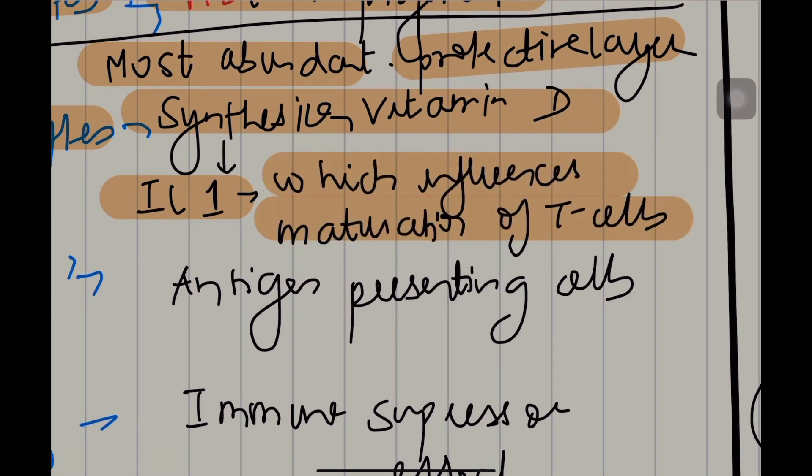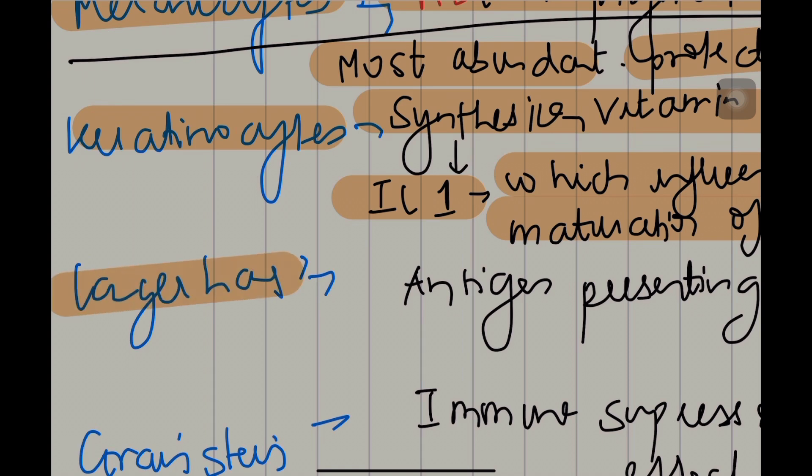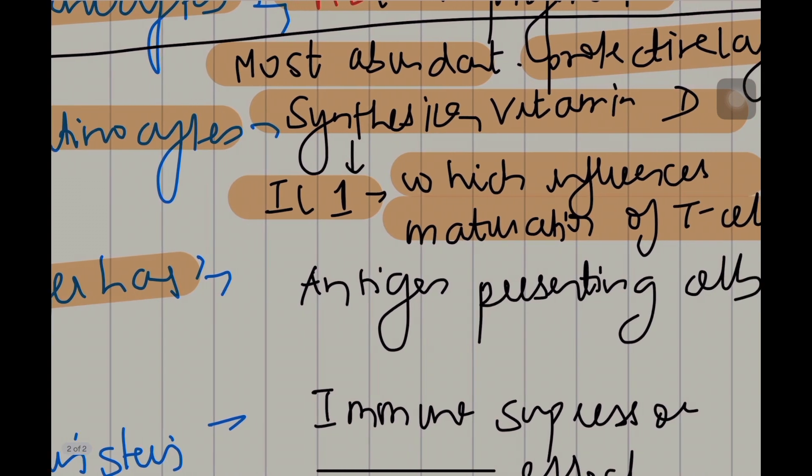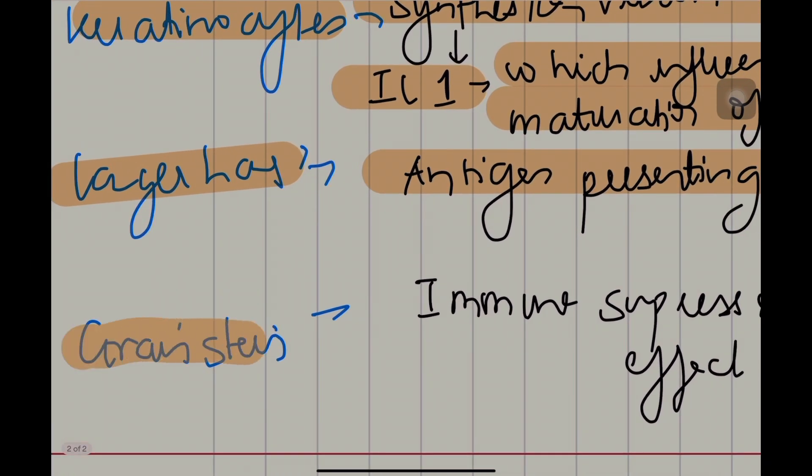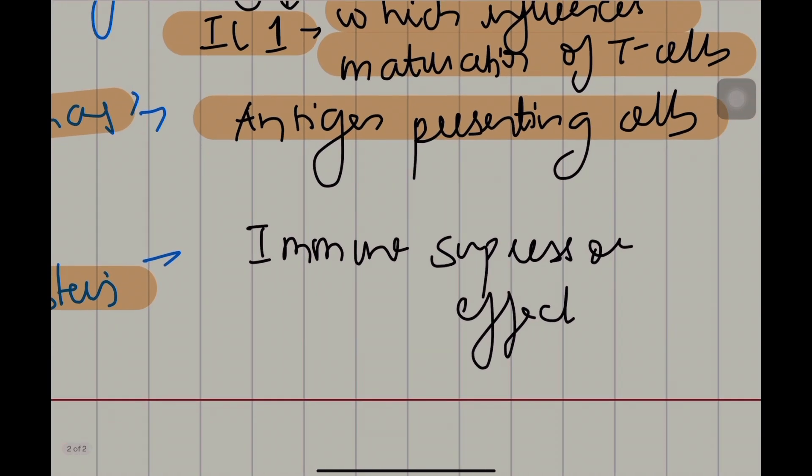Now let's go to Langerhans cells. L-A-N-G-E-R-H-A-N-S. Langerhans cells, these are antigen-presenting cells. The last cell is Grainstein, G-R-A-I-N-S-T-E-I-N. These are immune suppressor cells or they have an immune suppressor effect.